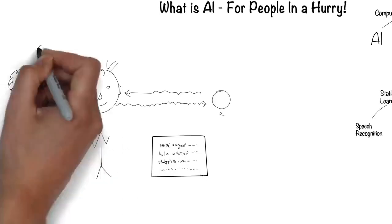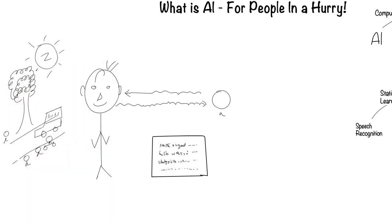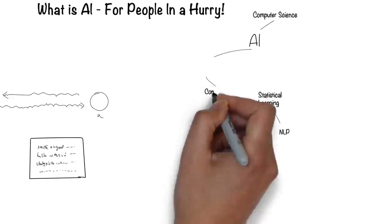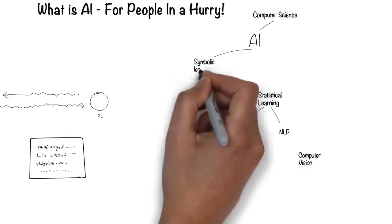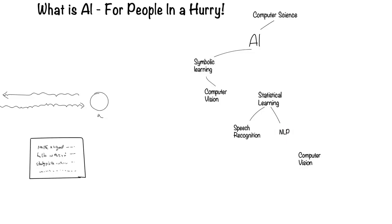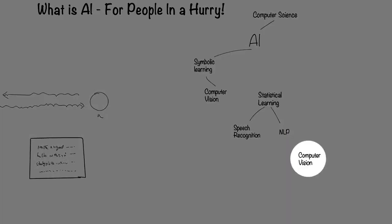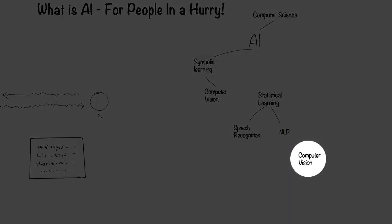Humans can see with their eyes and process what they see. This is the field of computer vision. Computer vision falls under the symbolic way for computers to process information. Recently, there's been another way, which I'll come to later.